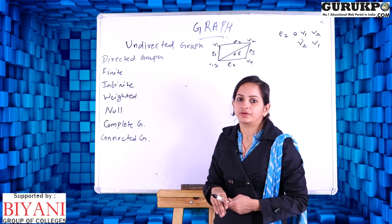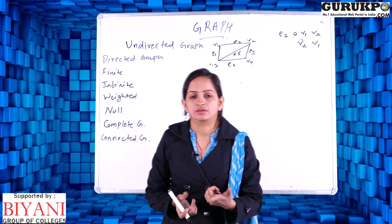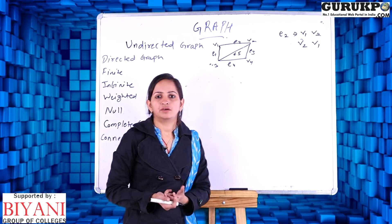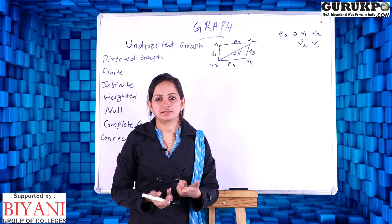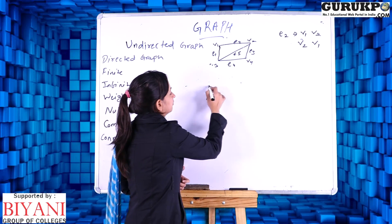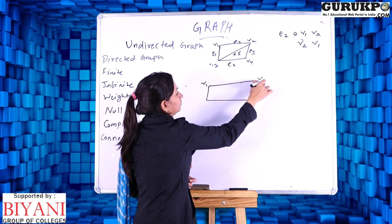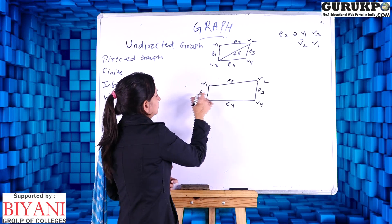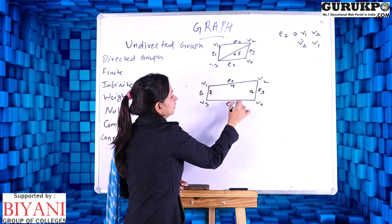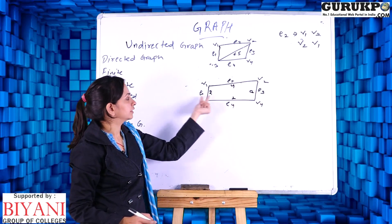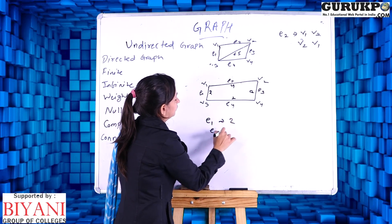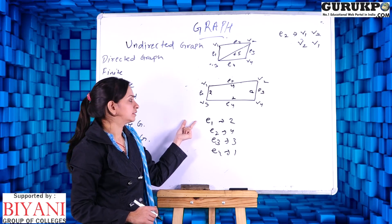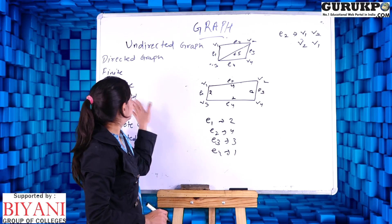The next type is called a weighted graph. In some types of graphs there is a weight or a number associated with each edge — that type of graph is called a weighted graph. For example, if I have vertices V1, V2, V3, V4 with edges E1, E2, E3, and E4, and I assign values such as E1 has weight 2, E2 has weight 4, E3 has weight 3, and E4 has weight 1, then a number is associated with each edge. So this type of graph is called a weighted graph, similar to how a directed graph has direction with each edge, here each edge has a weight.